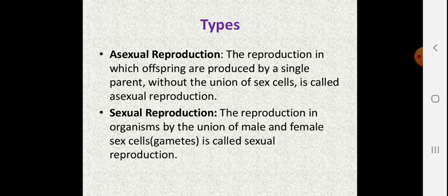The major types of reproduction are asexual and sexual reproduction. In asexual reproduction, only one parent is involved and offspring are produced without the union of sex cells — no gametes are involved. In sexual reproduction, both parents are involved, and reproduction occurs through the union of male and female sex cells, also called gametes.